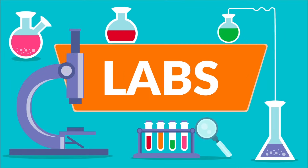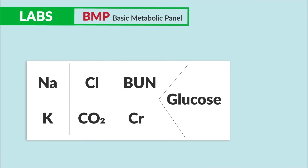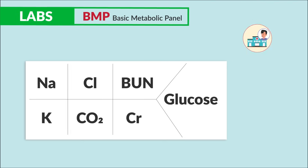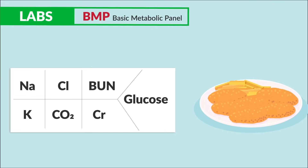For labs or laboratory values, starting with BMP — our basic metabolic panel — this is collected typically as a general survey of a patient when they come into the hospital for any reason, sort of like a sampler platter at a restaurant. We get a lot of different tests and are able to see a wide variety of stuff.